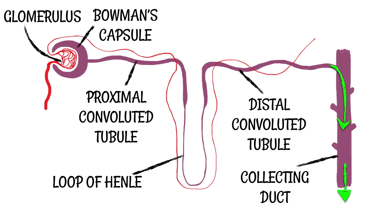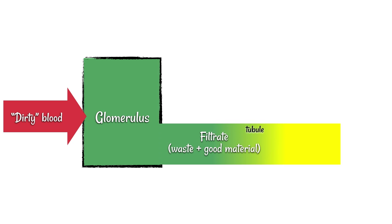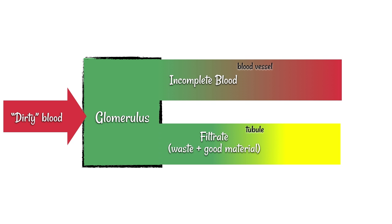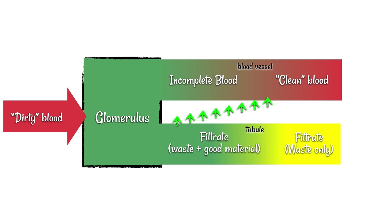The kidney function is quite complicated, so let's clarify all the different steps. Dirty blood comes in, and via the glomerulus the materials get separated. We get filtrate, which contains the waste material but unfortunately also lots of useful material, and that goes into the tubule. This is separated from the blood, but it's incomplete blood because useful materials like glucose and amino acids are now absent from the blood vessel. Through selective reabsorption, useful material is transferred back into the blood. We now have clean, complete blood. What's left behind in the tubule — urea, excess salts, excess water — is now known as urine and goes to the bladder to exit the body.